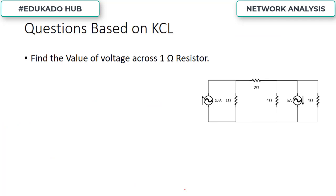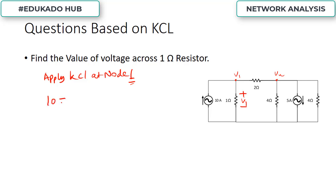The next question requires finding the voltage across the 1 ohm resistor using KCL. Let this voltage be V1. To apply KCL, we assign voltages at the nodes — let this node be V1 and this one be Vx. Applying KCL at node 1: 10 amps is the incoming current, and the two outgoing currents are leaving. This lower node is the reference point, grounded, so its voltage is 0 volts.